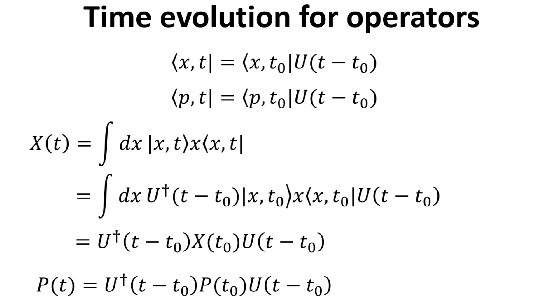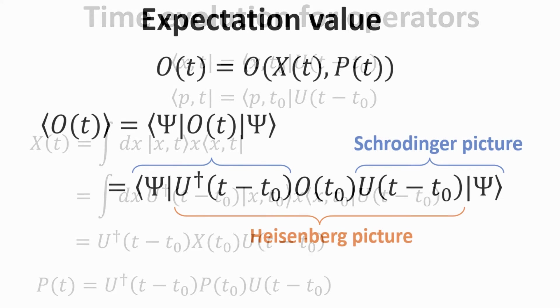The x ket and bra at time t can be expressed at an earlier time t zero using the time evolution operator u. Hence, we obtained an expression that relates the position operator at later time t to its counterpart at an earlier time t zero, which is a unitary transformation of the position operator. Similar unitary transformation can also be applied to the momentum operator.